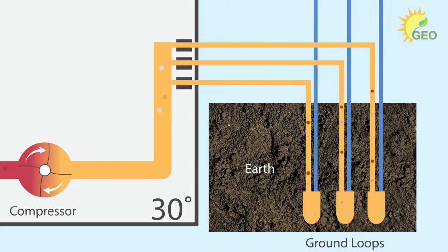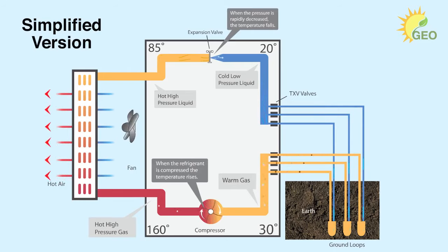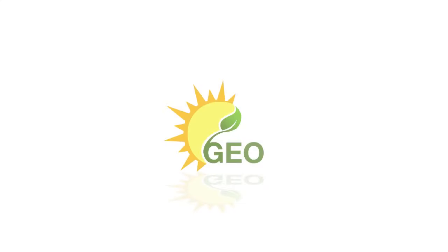It then moves toward the TXV valves. These valves control the amount of refrigerant distributed to each ground loop. The refrigerant is then piped out to the well field and down the vertical boreholes, where it begins its transformation back to a gas. As it transitions back to its gaseous state, it absorbs heat energy from the earth and travels back to the compressor, where this ingenious process is repeated.